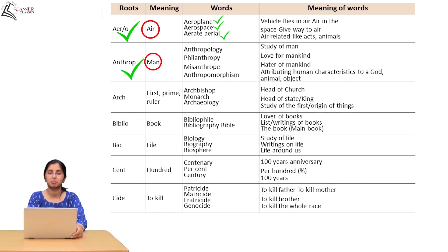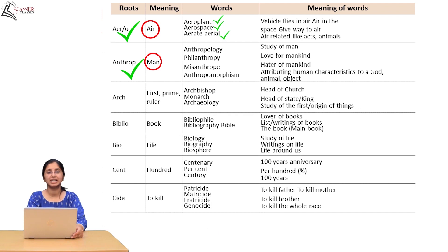Biblio is nothing but 'book'. From the root word 'biblio', words like Bibliophile, Bibliography, and Bible can be formed. Bibliophile means lover of books. Bibliography means a list or writings of books. Bible means 'the book' — the main book.